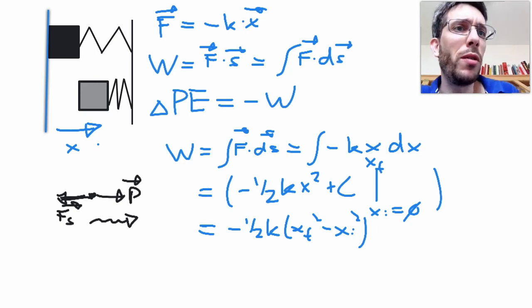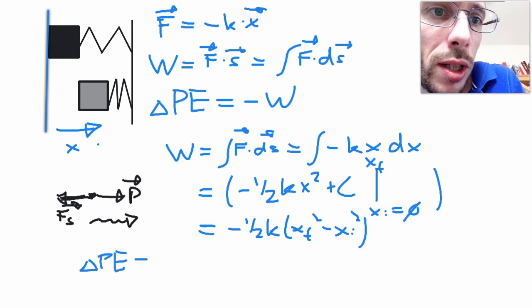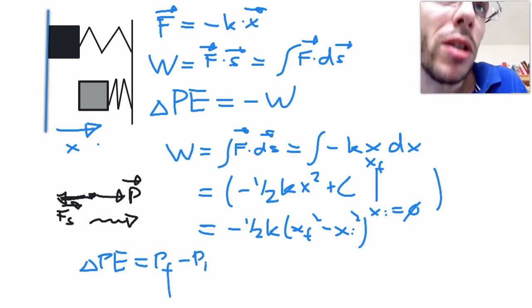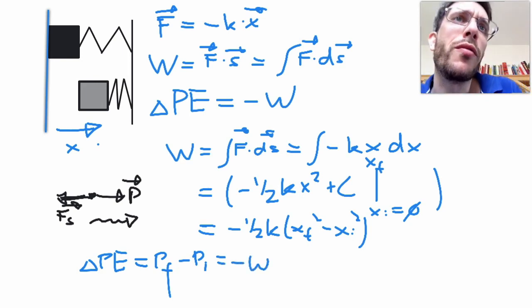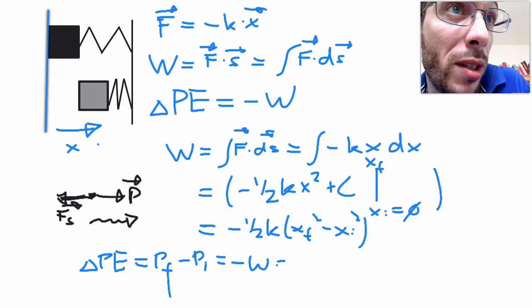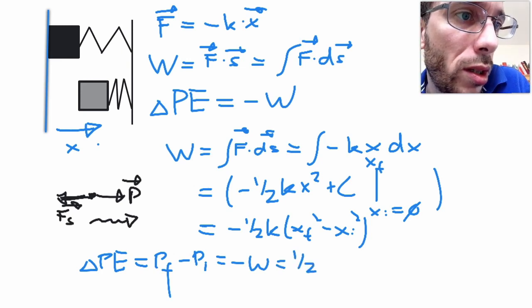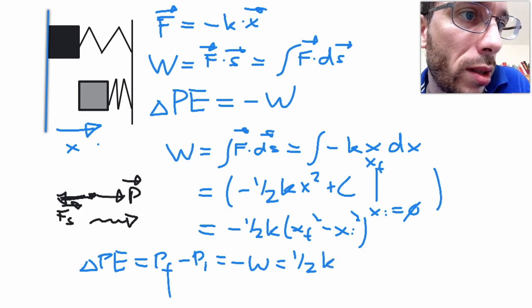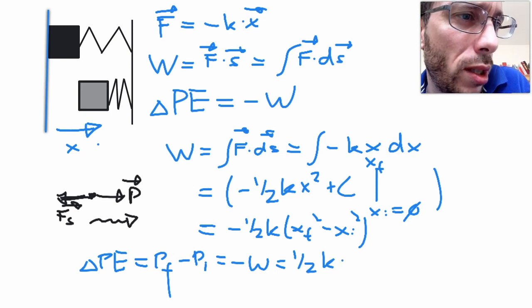Now where do we go with this? Well, now we use the potential energy. So we have change in potential energy, which is my potential energy final minus my potential energy initial, is minus the work done by the spring force. So minus minus gives me one-half times the spring constant times, if my x initial was at zero, x final squared.